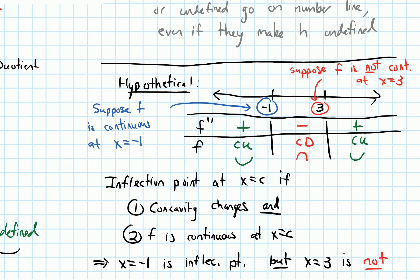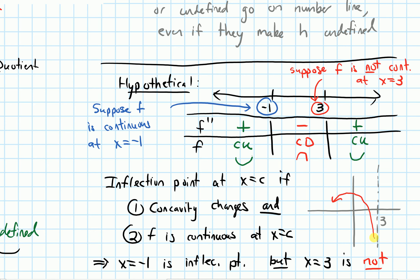What might this look like graphically? If there's a vertical asymptote at x equals three, the function could be concave down on the left side and concave up on the right side. Even though concavity switches from down to up, it's not an inflection point because the function wasn't continuous there — on a literal level, there's no point on the graph at x equals three, so there can't be an inflection point.